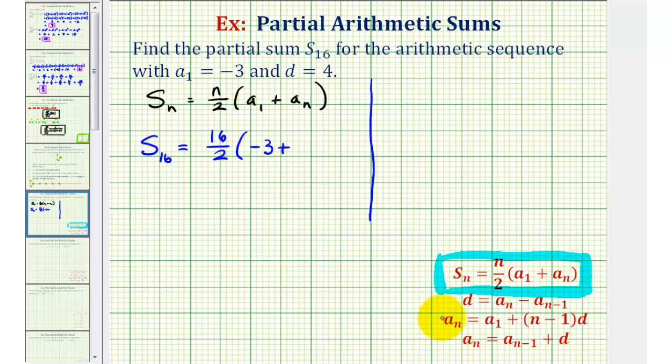To do this, we can use the formula here. A sub N equals A sub one, plus the quantity N minus one times D, since we know we have an arithmetic sequence.